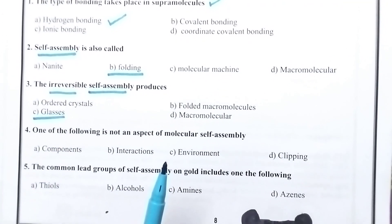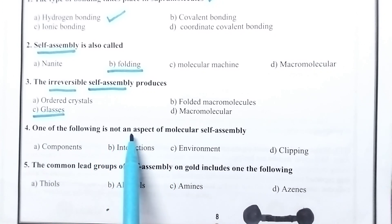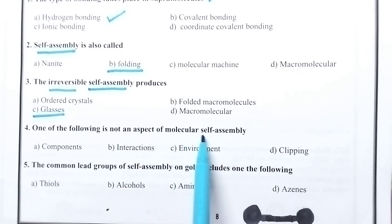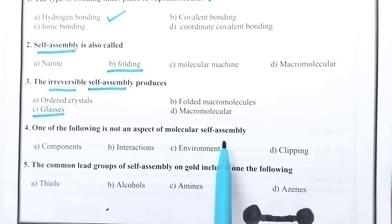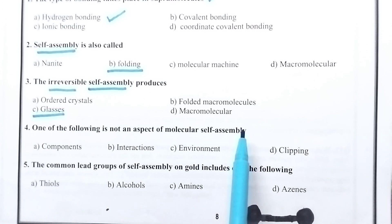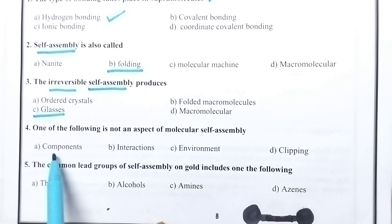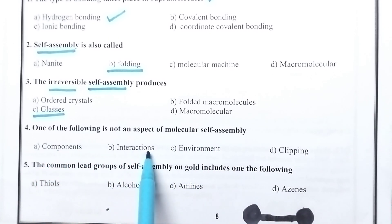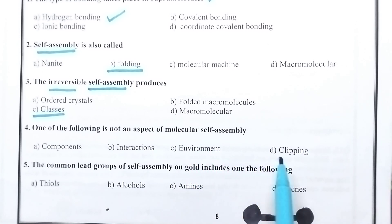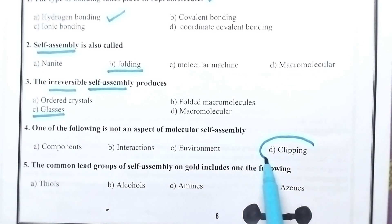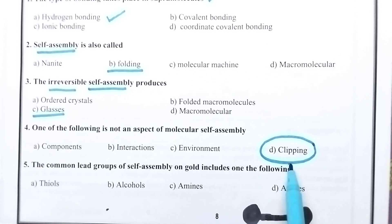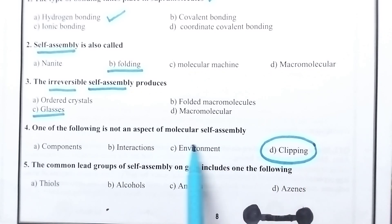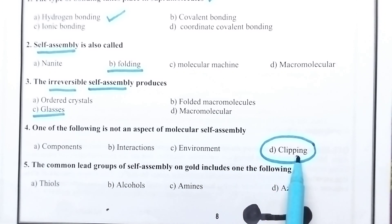One of the following is not an aspect of molecular self-assembly. Molecular self-assembly especially deals with the interactions of the components depending upon the environment — that means self-assembly deals with components, interactions, and also with the environment. Clipping is the method used for the preparation of rotaxins, so molecular assembly will not deal with clipping. Option D is the right option.